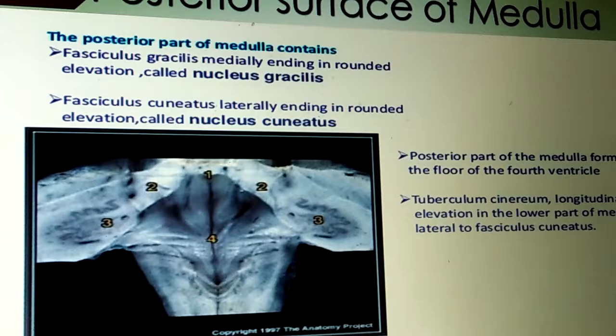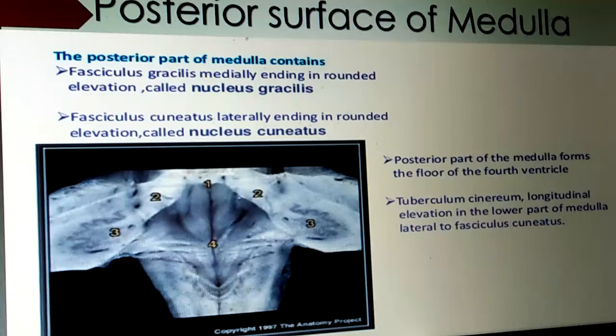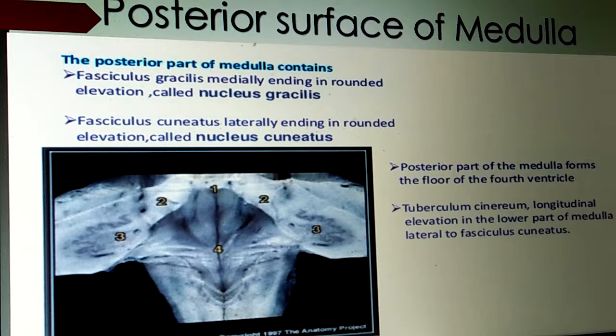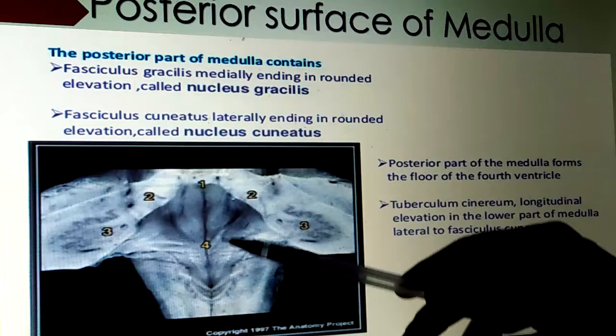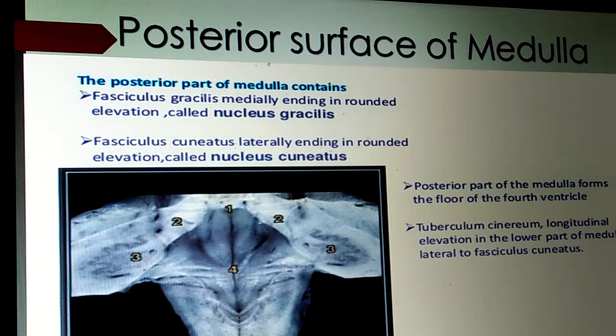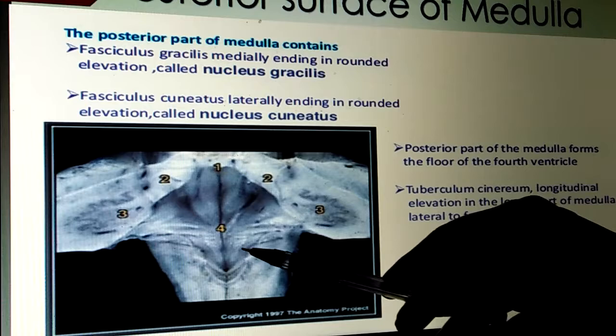The posterior surface of the medulla oblongata contains fasciculus gracilis (medially) and fasciculus cuneatus, with rounded elevations called nucleus gracilis and nucleus cuneatus. The posterior part of the medulla also forms the floor of the fourth ventricle. The tuberculum — a longitudinal elevation in the lower part of the medulla — is lateral to the fasciculus cuneatus.